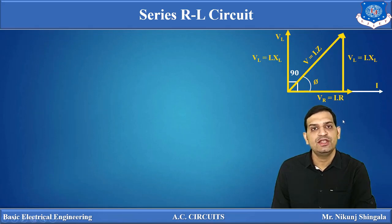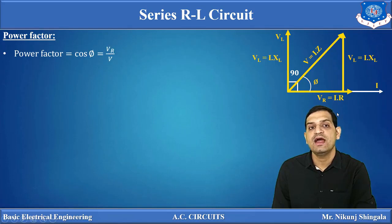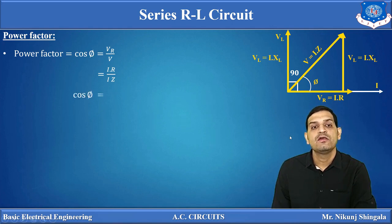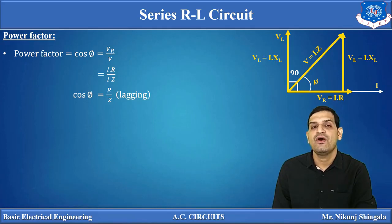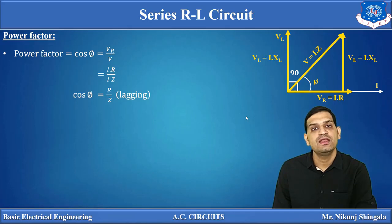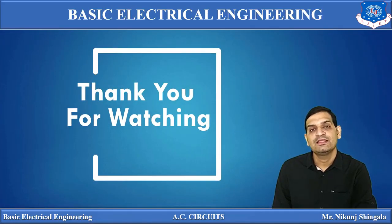The power factor is the cosine of the angle between voltage and current. From the voltage triangle, cos(φ) = Vr / V = iR / iZ = R / Z (lagging), where Z = √(R² + XL²). This is the power factor of the inductive circuit — lagging. In summary, today's lecture covered the analysis of the series RL circuit: derivation of voltage, current, impedance, phase angle, waveforms of voltage, current and power, and the expression for power factor. Thank you for watching.